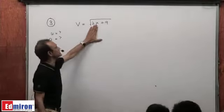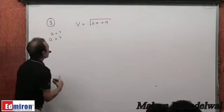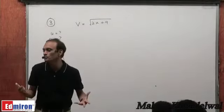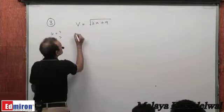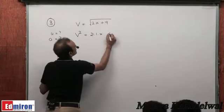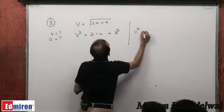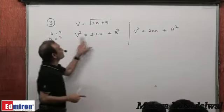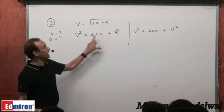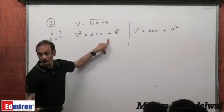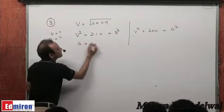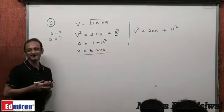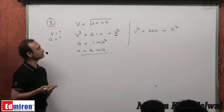The velocity as a function of displacement x is given as V = √(2x + 9). We want to find the acceleration and the initial velocity (velocity when x = 0). Realizing V² = 2(1)x + 9, we compare with V² = u² + 2ax. By comparison this is a case of constant acceleration with a = 1 m/s² and u = 3 m/s.